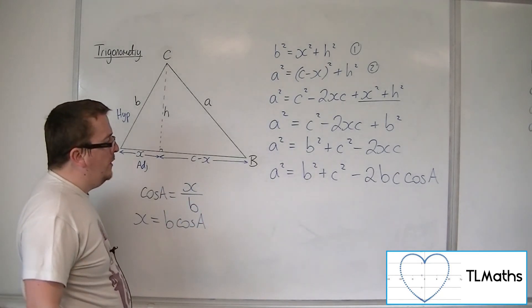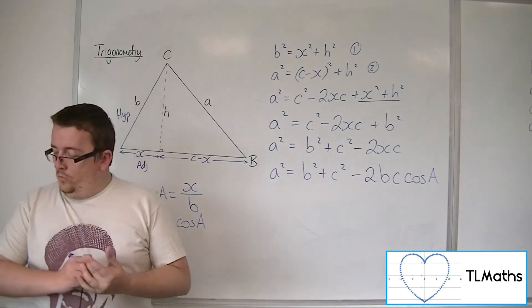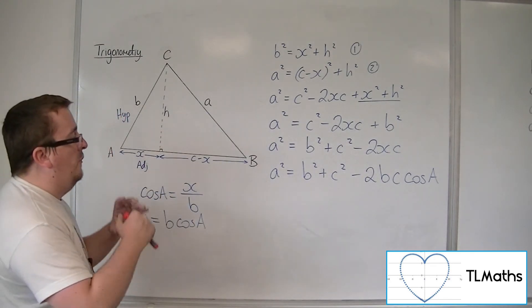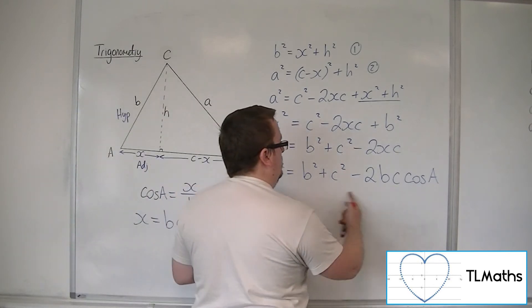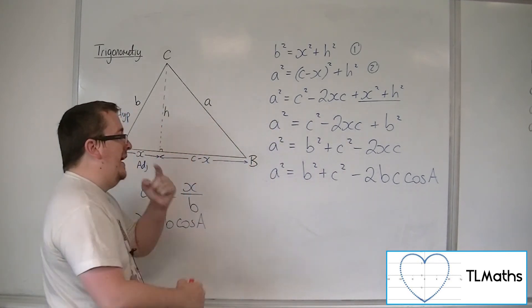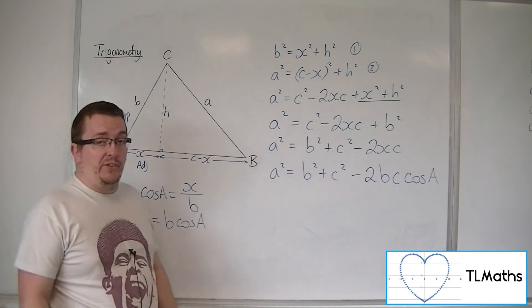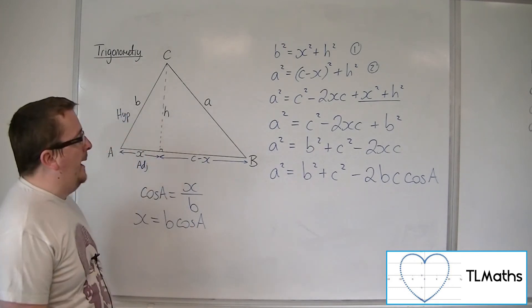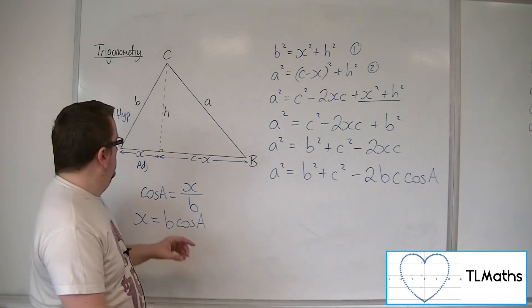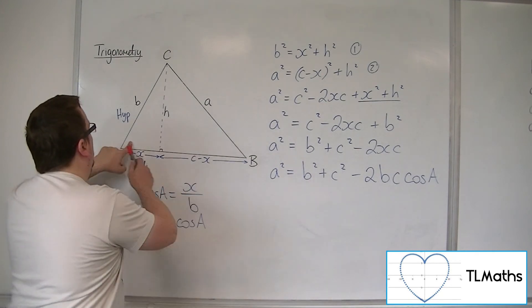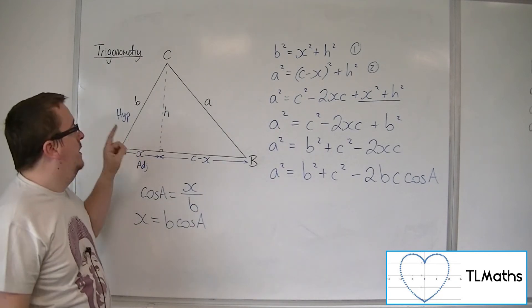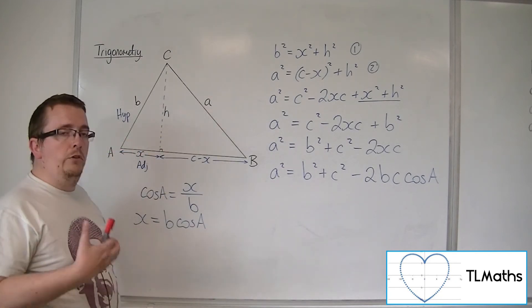Now with that in mind, this is a very useful formula in order to find a missing side or angle. So if you've got an angle and two missing sides either side of it, you can't use the sine rule. You want to find that missing side, you use the cosine rule.